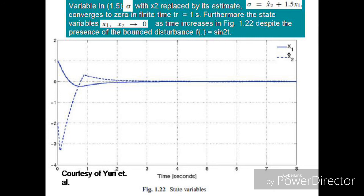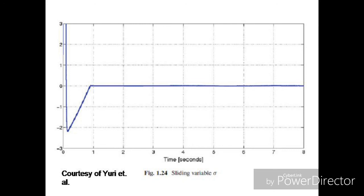Sigma converges to 0 in finite time — the reaching time is 1 second (t > 1s). Furthermore, the state variables x1 and x2 converge to 0 as time increases. Despite the presence of disturbance, we still have convergence of the state variables to 0. We used a sliding mode observer to estimate x2, then used that estimated x2 in the sliding mode control with Sigma as the sliding variable, bringing the state variables down to 0. The final slide shows the sliding variable Sigma converging to 0 after one second.